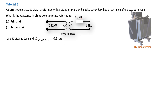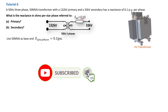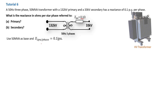We are given the per unit reactance, and we need to determine the reactance in ohms — not per unit, but the actual reactance, ignoring the resistive component. We need to use 50 MVA as the base and treat the 0.1j per unit value as the per unit per phase on the secondary. The solution to our problem will be straightforward.